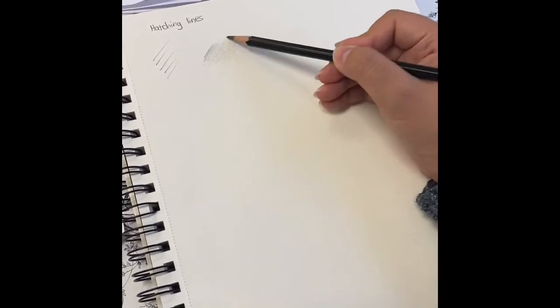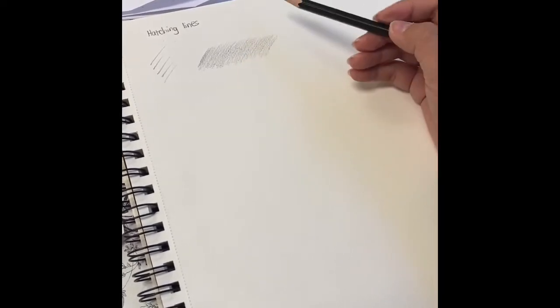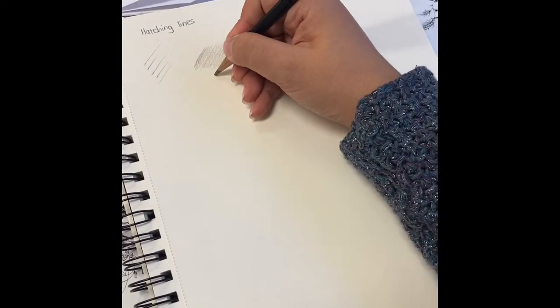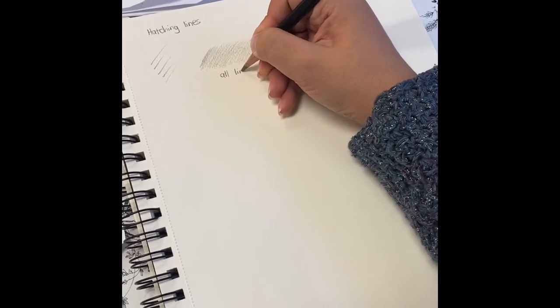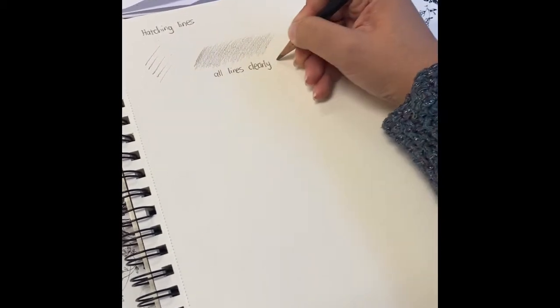And if done correctly, your hatching lines should all be going in one direction and they blend nicely. So if you're left-handed, it might go in the opposite direction and that's okay as long as they are all going in the same direction.